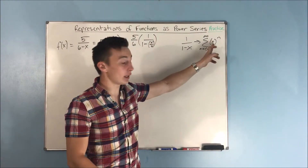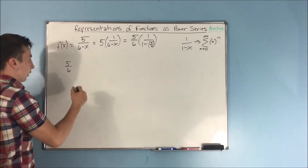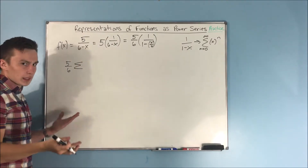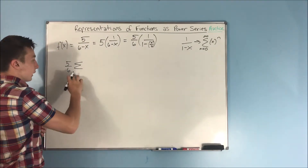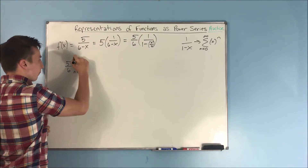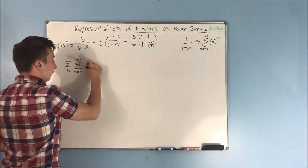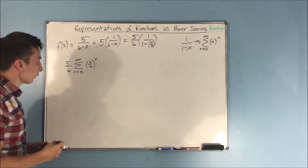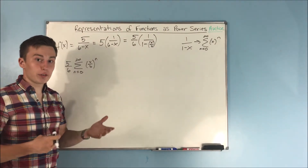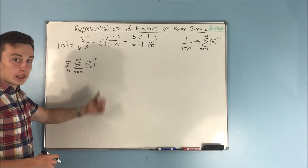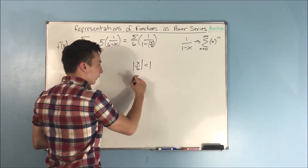We have that 1 over 1 minus something form, and that something — x over 6 — is our common ratio. So let's write the power series: we have 5 over 6 on the outside of the sigma, times the sum from n equals 0 to infinity of x over 6 raised to the nth power. Now let's find the interval of convergence. We need the absolute value of x over 6 to be less than 1.